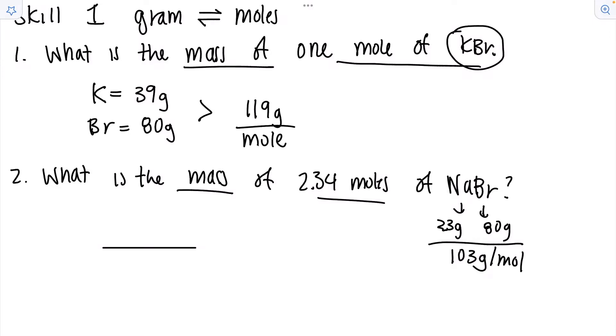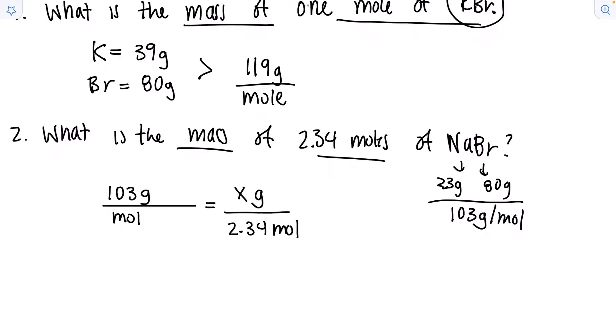So we're going to plug that in on the left side. 103 grams per mole. Set that equal to x grams over 2.34 moles. And if we cross multiply we will get 250 grams of NaBr. This makes sense because if one mole is 103 grams then 2.3 should be more than double that.